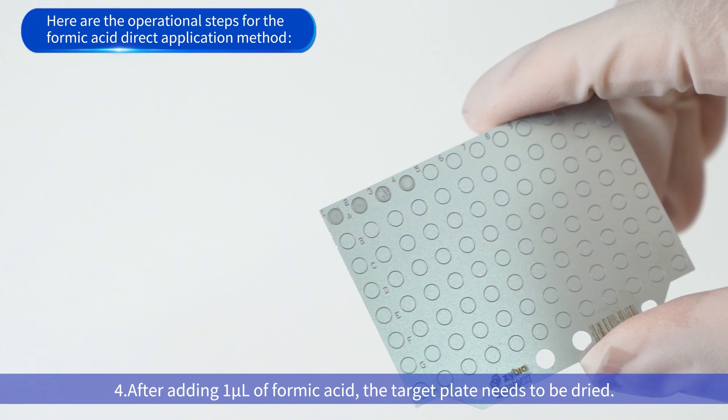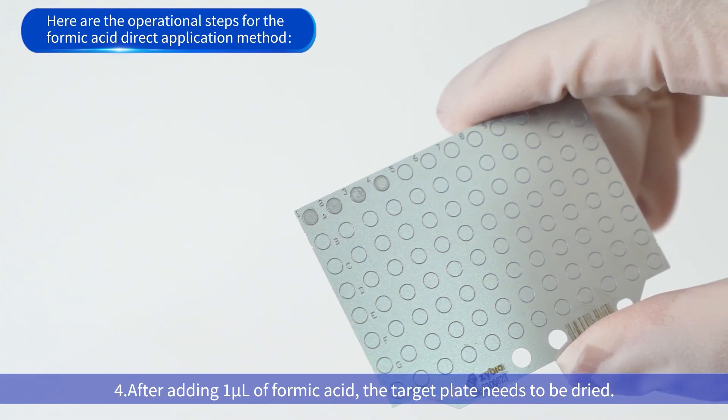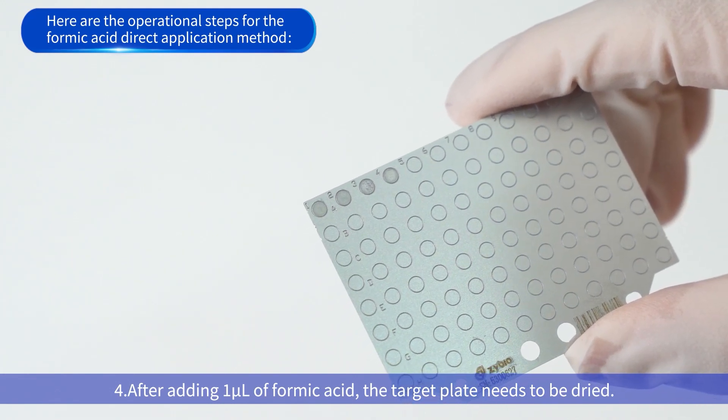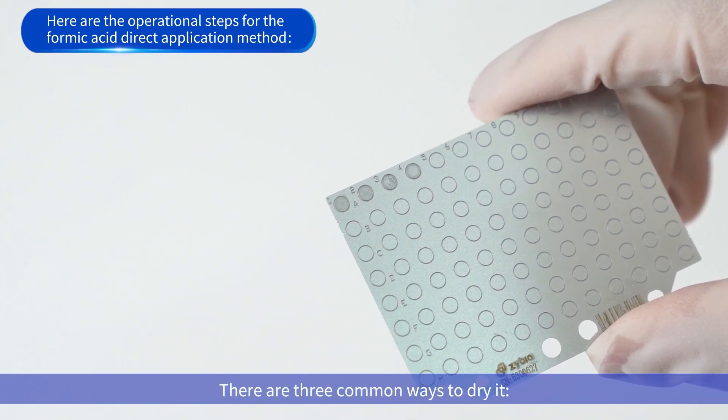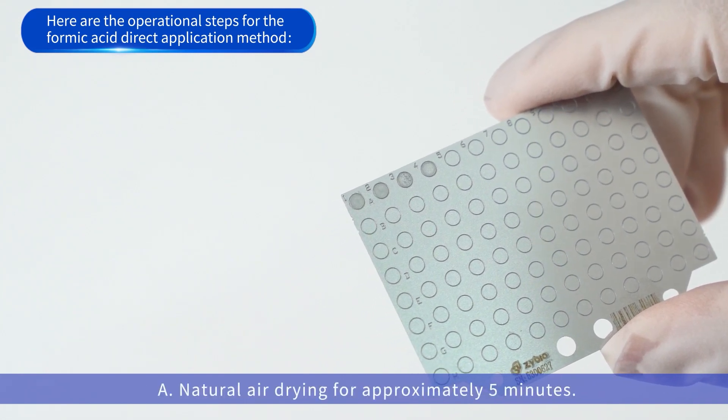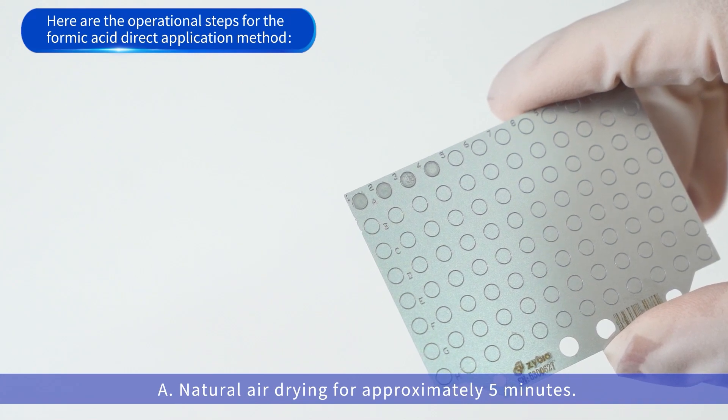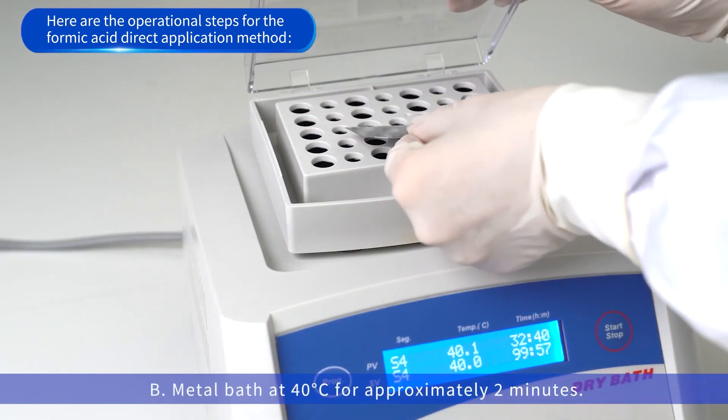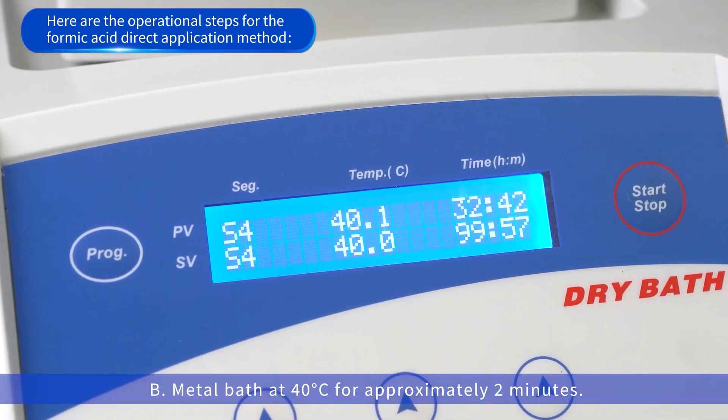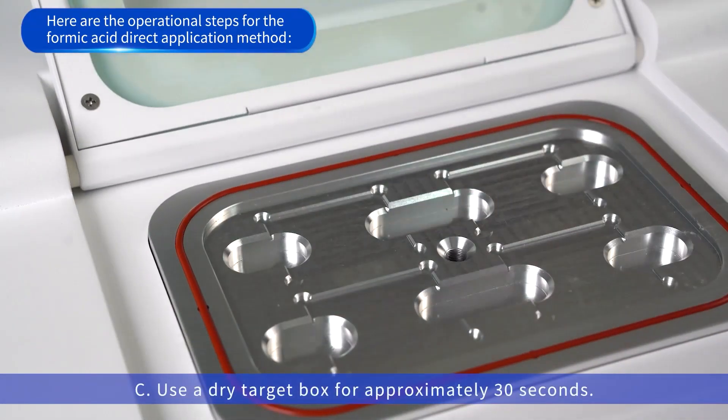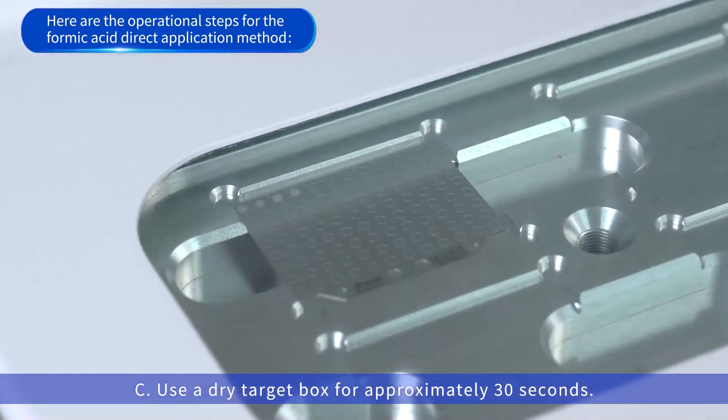Fourth, after adding 1 microliter of formic acid, the target plate needs to be dried. There are three common ways to dry it: A) Natural air drying for approximately 5 minutes, B) Metal bath at 40 degrees Celsius for approximately 2 minutes, or C) Use a dry target box for approximately 30 seconds.